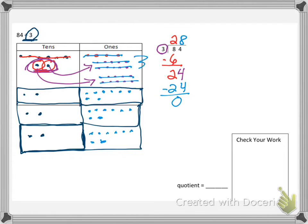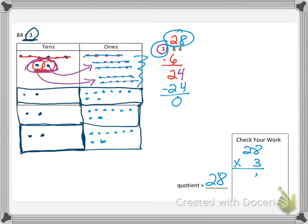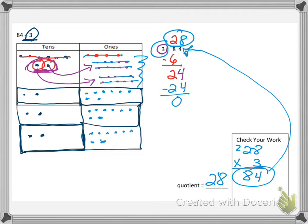And we have nothing left in the ones as a remainder. So our quotient is 28 and there's no remainder. How do we check our work? We multiply this number times this outer number — 28 times 3. 8 times 3 is 24, put the 4, carry the 2. 2 times 3 is 6, plus 2 is 8. And there's no remainder to add. So this is our answer — 84. We were able to find this problem using place value chart and standard division. Check.